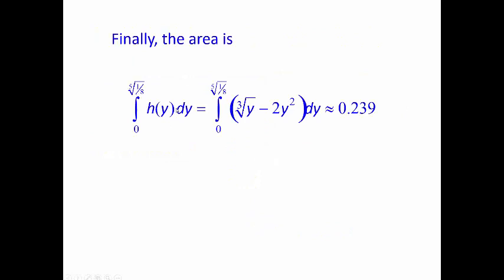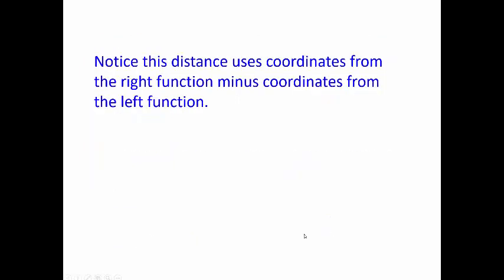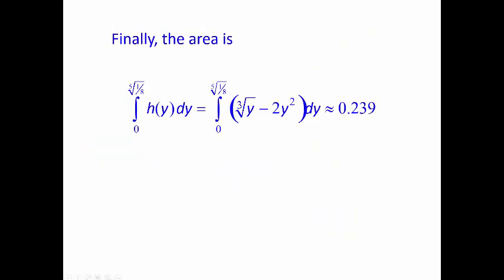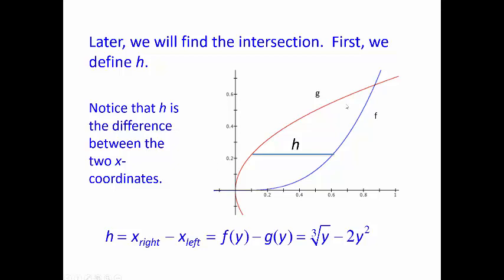The height h(y) — going back — was the cube root of y minus 2y squared, the right minus the left. If you integrate both these easily using the general power rule and then plug in the bounds of integration, you get the result. The integration part is not the hardest part — setting it up is the hardest part. And what makes setting it up easier is the graph. If you can get the graph set up correctly, the rest of it kind of falls into place.